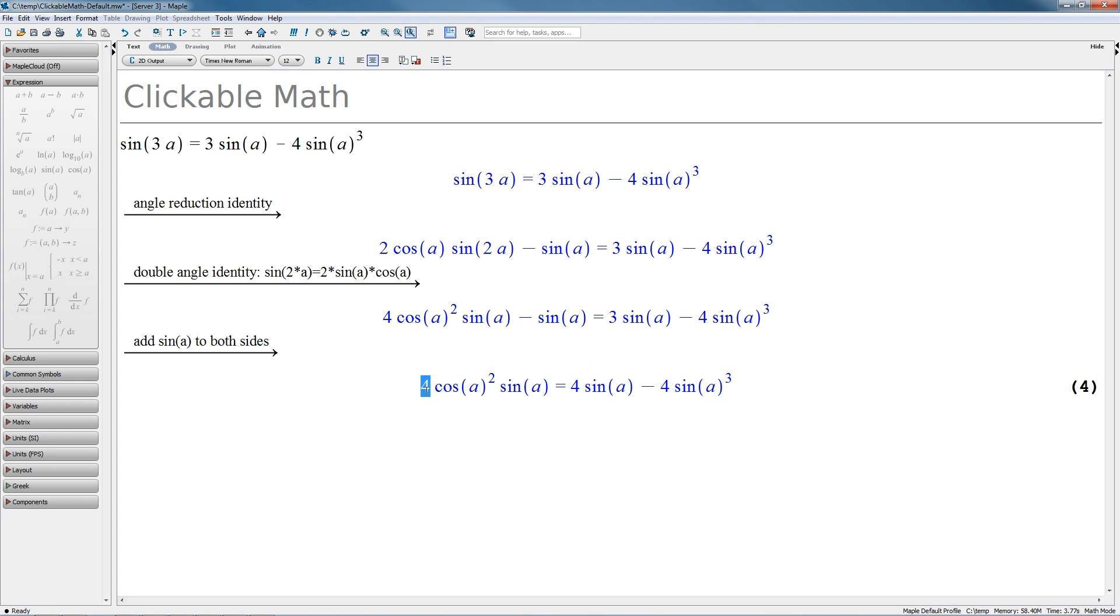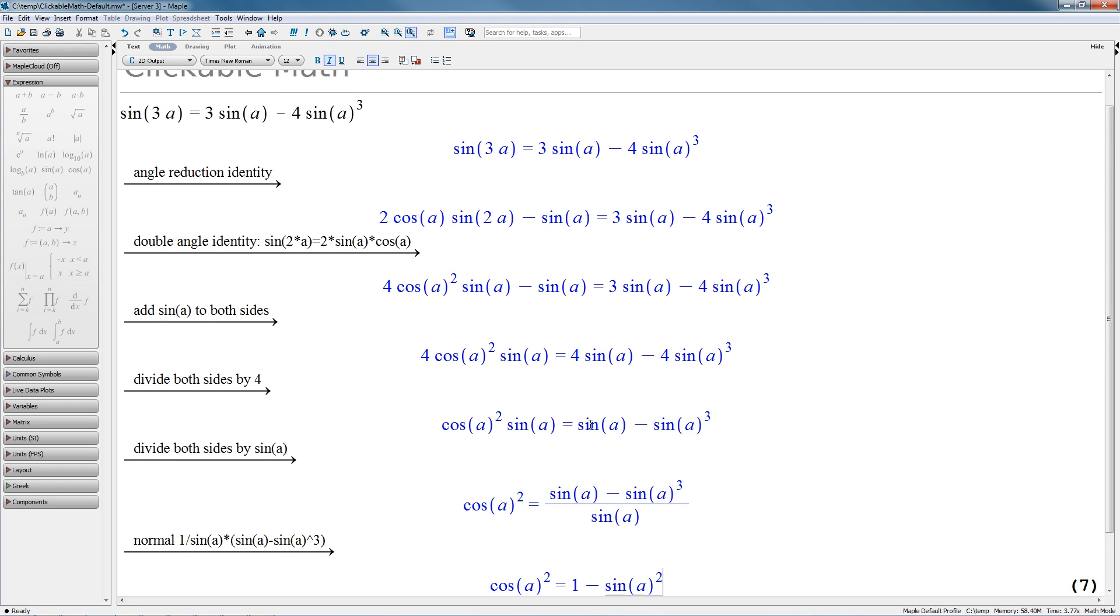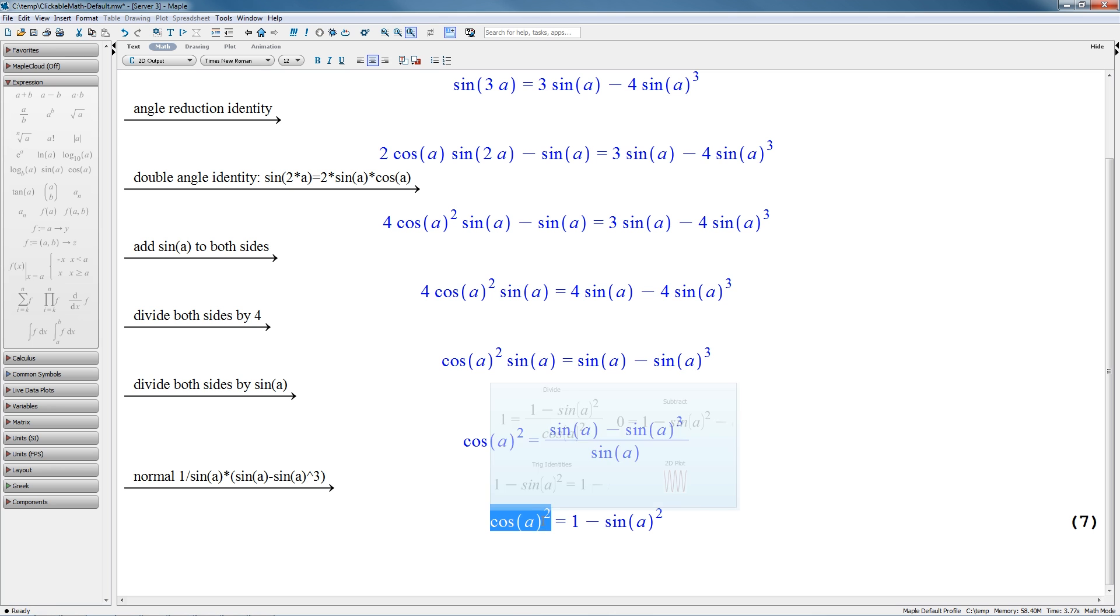In this example, we can use smart pop-ups to prove that the left-hand side of a trig expression is equal to the right-hand side, by stepping through a sequence of trigonometric identities, as well as simple algebraic manipulations.